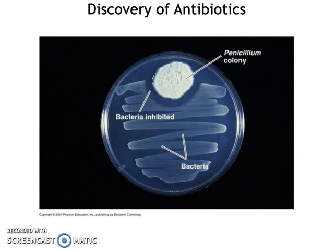Subsequent discoveries by other individuals later realized that the reason why these two colonies did not overlap and grow right up next to each other was because that penicillium colony was releasing a molecule that inhibited and even killed the bacteria on the petri plate. That molecule was then named penicillin.